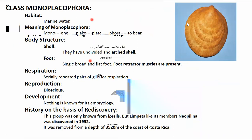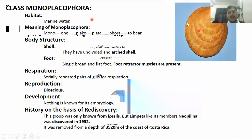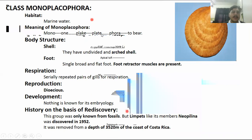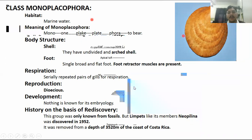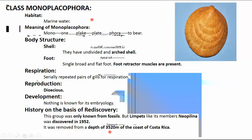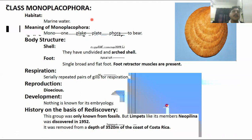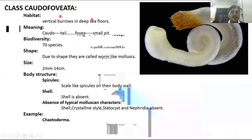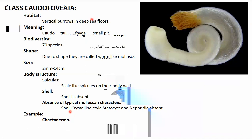The word 'mono' means single, 'pleco' means plate-type, and 'phora' means to bear, referring to its single shell. The example is Neopilina. This living animal was discovered at a depth of 3,520 meters off the coast of Costa Rica. It was so deep that it was thought to be extinct, but it was rediscovered in 1952. The next class is Caudofoveata, where gas exchange of waste material removal occurs by diffusion through the body wall.